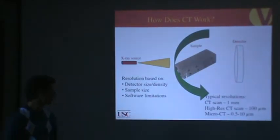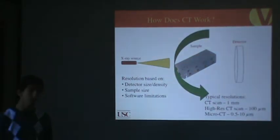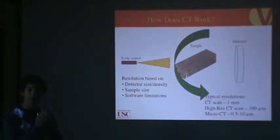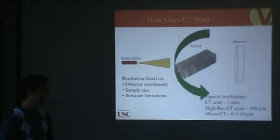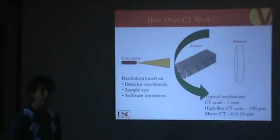It's also based on software limitations. Certain types of software that do micro-CT, they can only handle images up to maybe 4,000 by 2,000 pixels or something like that. And so even if you have a very small sample size, you might be only able to get a certain resolution based on the size of the picture that you can get. Typical resolutions for a medical CT scan, it's about one millimeter. They also have high-resolution CT scans if they want to focus and specifically image a tumor or something very small, and those can be 100 microns. Micro-CT, depending on your system, depending on your sample size, it can reach resolutions as low as half a micron, typical maybe 5 or 10 microns.